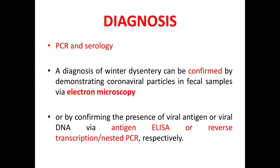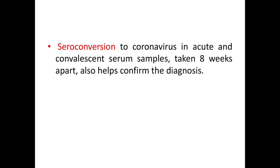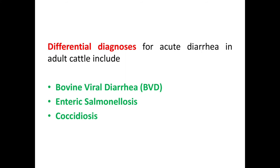The primary diagnostic techniques are PCR and serology. A diagnosis of winter dysentery can be confirmed by demonstrating coronaviral particles in fecal samples via electron microscopy, or by confirming viral antigen or viral DNA via antigen ELISA or reverse transcriptase PCR. Seroconversion to coronavirus in acute and convalescent serum samples taken 8 weeks apart also helps confirm the diagnosis. Differential diagnoses for acute diarrhea in adult cattle include bovine viral diarrhea, enteric salmonellosis, and coccidiosis.